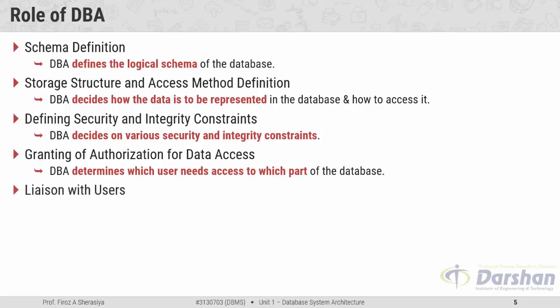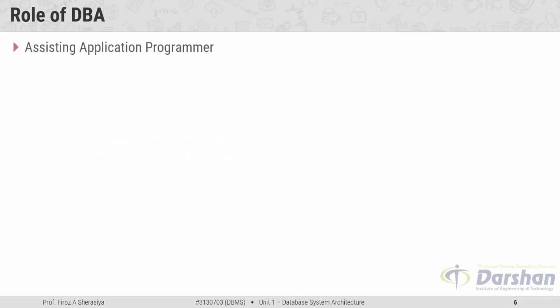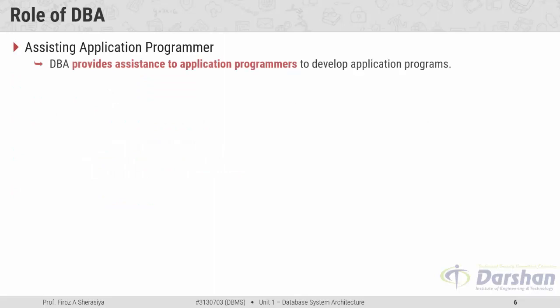The fifth role is liaison with users — whatever necessary data the user requires is always provided by the DBA. The sixth role is assisting application programmers. The DBA will provide help to application programmers to develop their application programs, because the entire database is created by the DBA, who knows the different tables, relationships between tables, and what data is stored where.